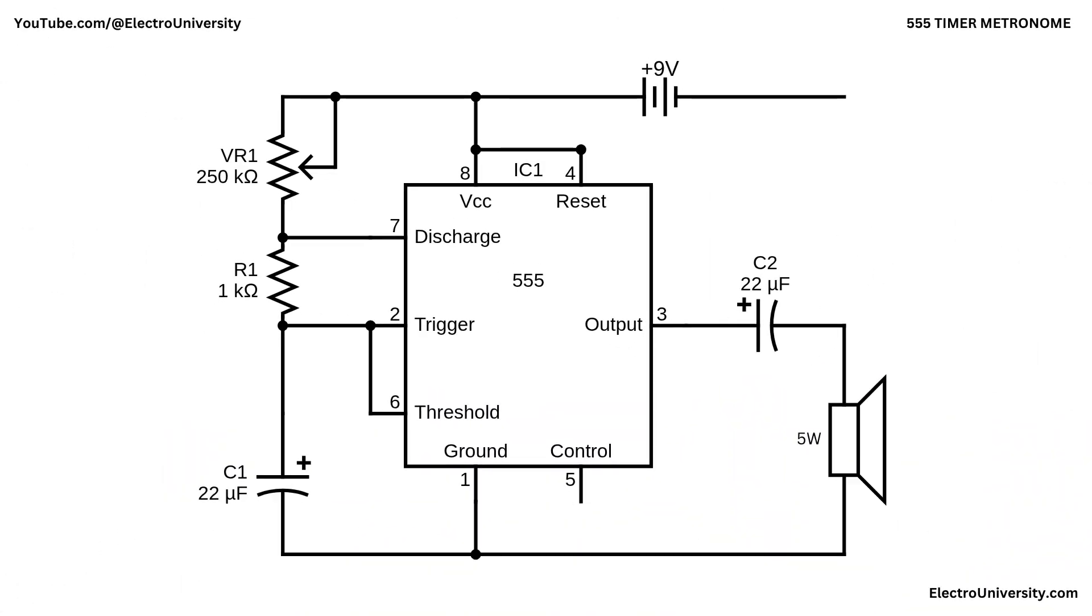Let's dive into the circuit and break it down step by step. This is a 555 timer metronome that generates periodic clicks in a speaker. The 555 is wired in astable mode. Pin 2 or trigger and pin 6 or threshold are tied together and connected to the 22 microfarad capacitor C1. The other side of C1 goes to ground.